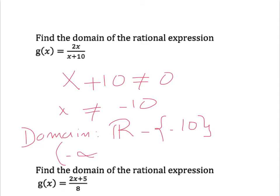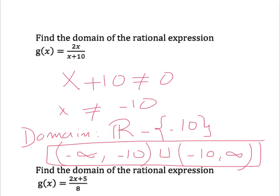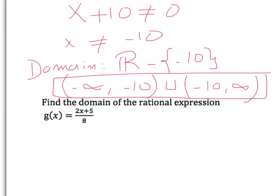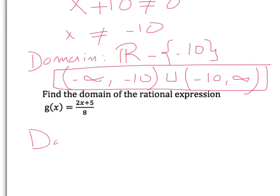We can write, for example, from negative infinity to negative 10, and from negative 10 to positive infinity. For the domain of g(x) equals 2x plus 5 over 8 — the denominator is 8, which is never 0, so there is no problem. We can write x as any point, so the domain must be all real numbers R.